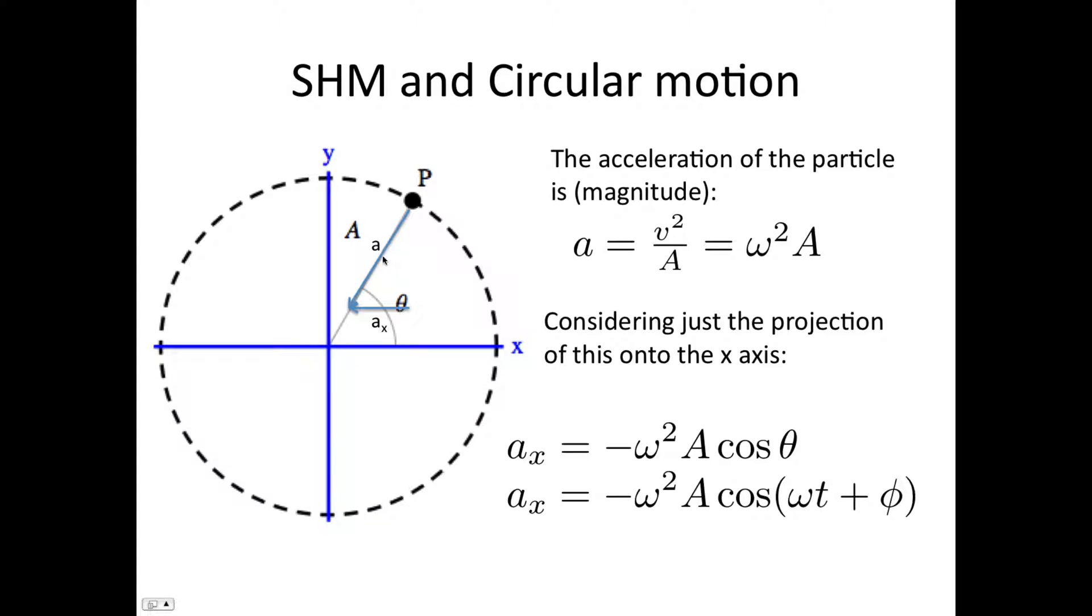And now consider just the projection of the acceleration onto the x axis. This angle in here is theta this time, so we have a cos theta. The x component of the acceleration is equal to the total acceleration times cos theta times the negative, as it's in the negative x direction.